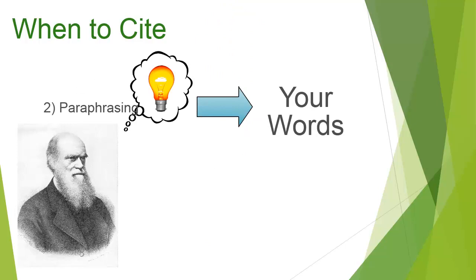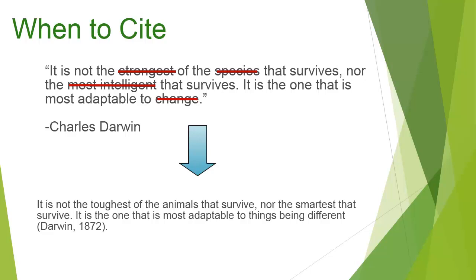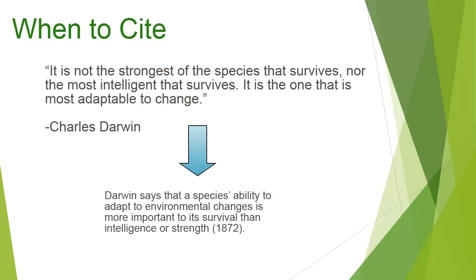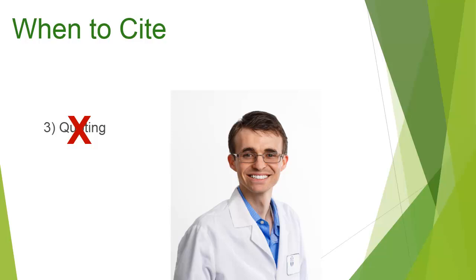Paraphrasing is a way to explain other people's specific ideas in your own words. When summarizing or paraphrasing, it is not enough to just change a few words from the original source — you must truly write in your own words. When you successfully summarize or paraphrase, you demonstrate a solid understanding of the material and avoid plagiarism. Quoting is a way to use the author's exact words if they illustrated a point particularly well. However, this is rarely done by scientists and you should avoid using it in your biology papers.